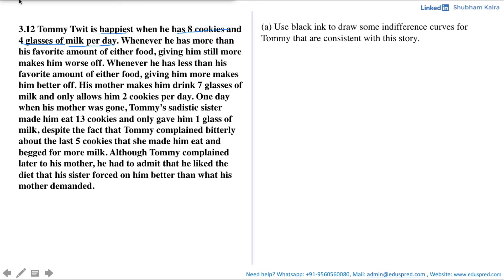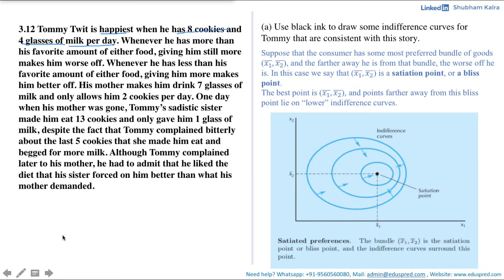Let's quickly revise what we mean by bliss point. We sometimes consider a situation where there is some overall best bundle for the consumer, and the closer he is to that best bundle the better off he is in terms of his own preferences. Suppose a consumer has a most preferred bundle x1-bar and x2-bar, and the farther away he is from that bundle the worse off he is. This combination is called the bliss point or satiation point.